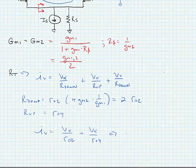Or we simply find that Vx over Ix, which is equal to RT, is equal to R02 in parallel with R04.